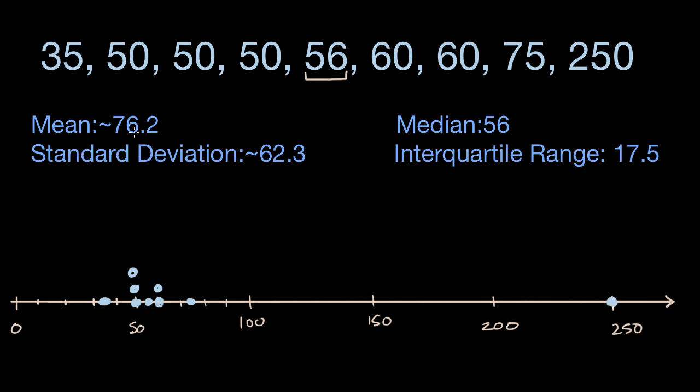When we calculate the mean as 76.2 as our measure of central tendency, 76.2 is right over there. So is this a good measure of central tendency? Well, to me, it doesn't feel that good, because our measure of central tendency is higher than all of the data points except for one. The reason is that our data is skewed significantly by this data point at $250,000. It is so far from the rest of the distribution that it has skewed the mean.